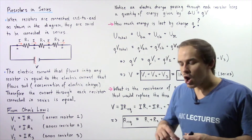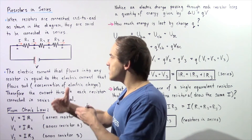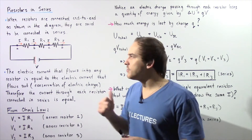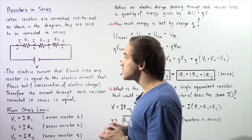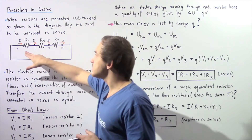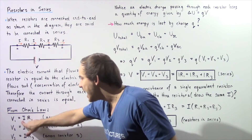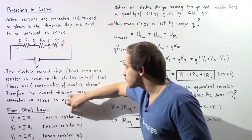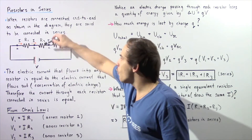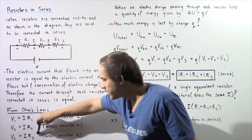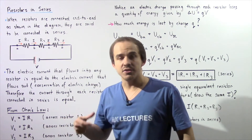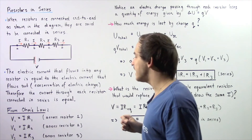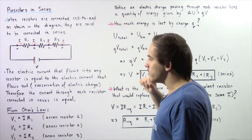That leads directly to the following equations. Recalling Ohm's law, the voltage across any resistor is equal to the product of the electric current through that resistor and the resistance of that device. So the voltage difference across resistor 1 is V1 = I × R1. The same exact thing can be said for resistor 2 and resistor 3. Notice the I's are exactly identical because of the conservation of electric charge.